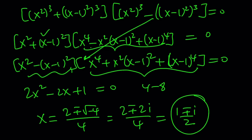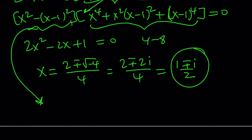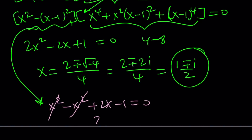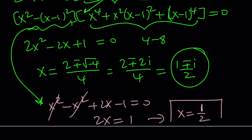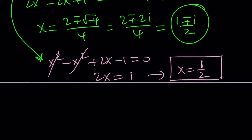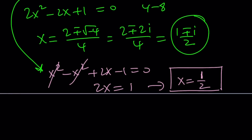In the second case, x² cancels out, giving us x² minus x² plus 2x minus 1 equals 0. When x² cancels, we end up with a linear equation, which has a real solution. So x equals 1 half is the real solution — and it is going to be the only real solution for this equation. Let me tell you why. We're also going to talk about different approaches using complex numbers.